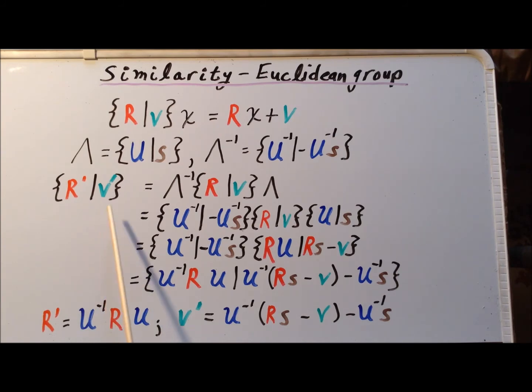Now setting equal the right hand sides of the Seitz expression, we get that the transformed shift vector V prime is equal to this expression here. That's U to the minus 1 of the quantity R S minus V minus U to the minus 1 of S.